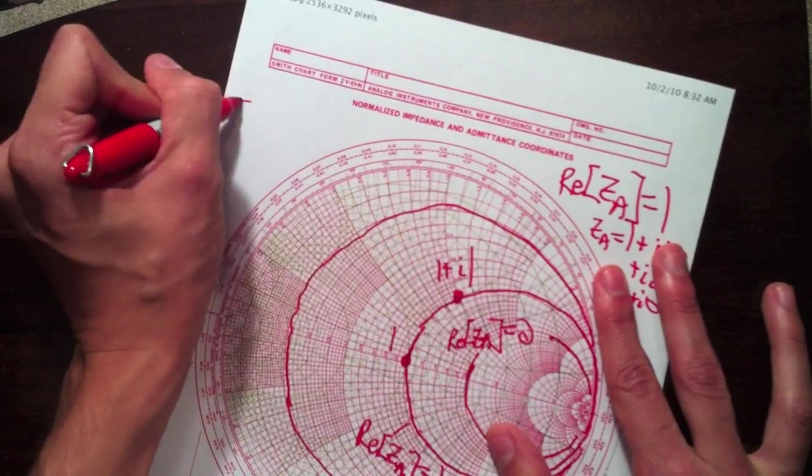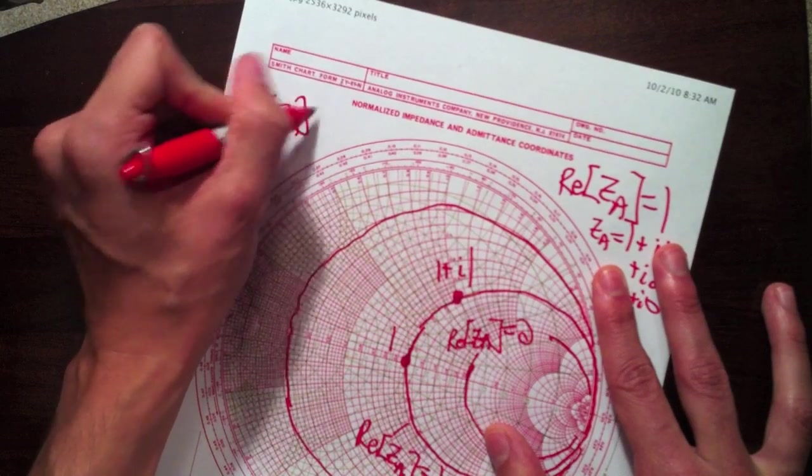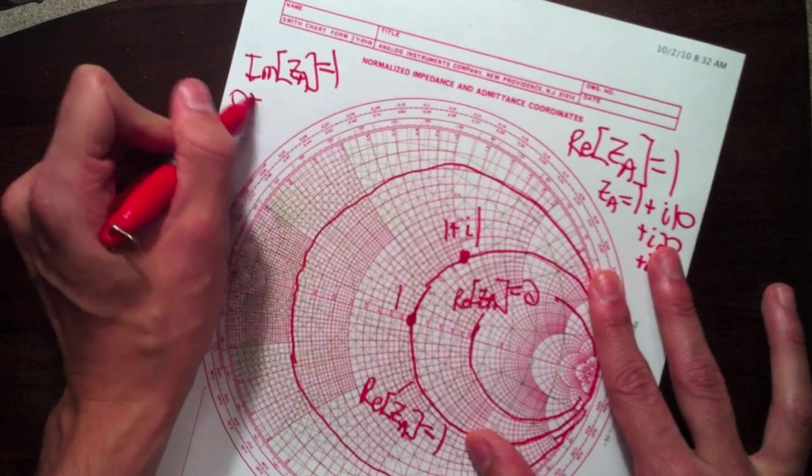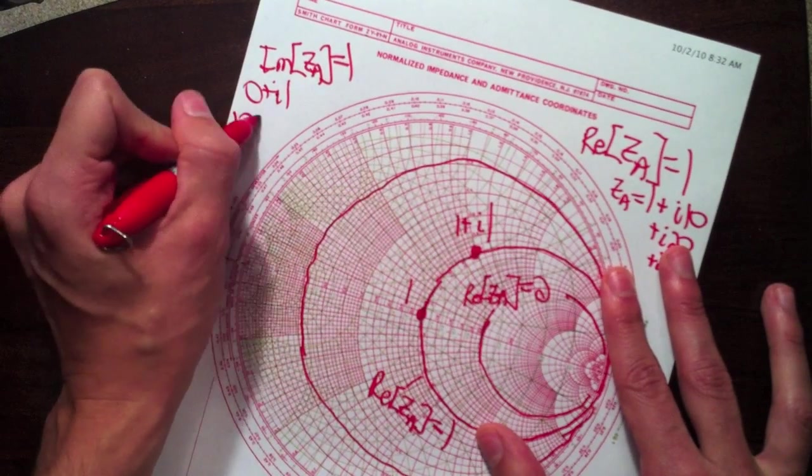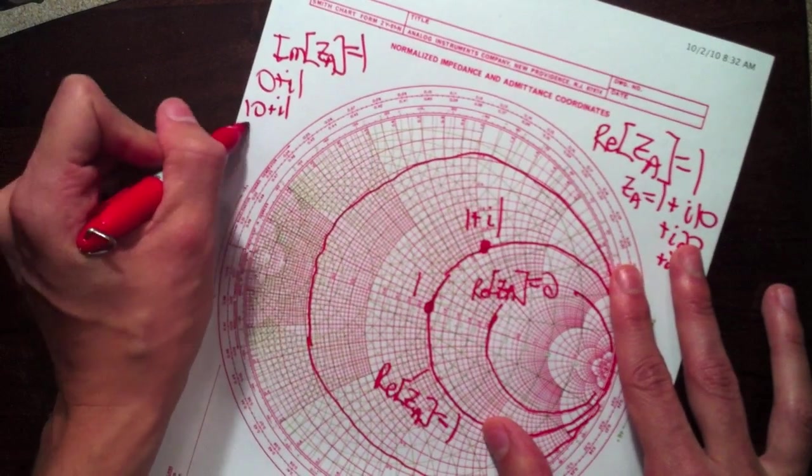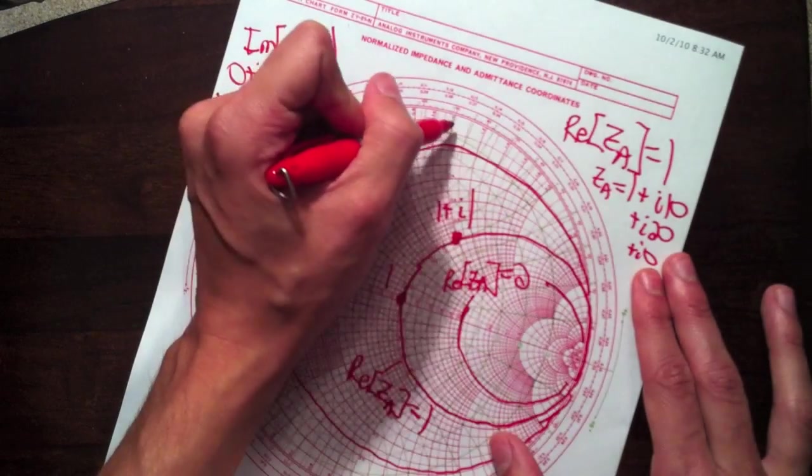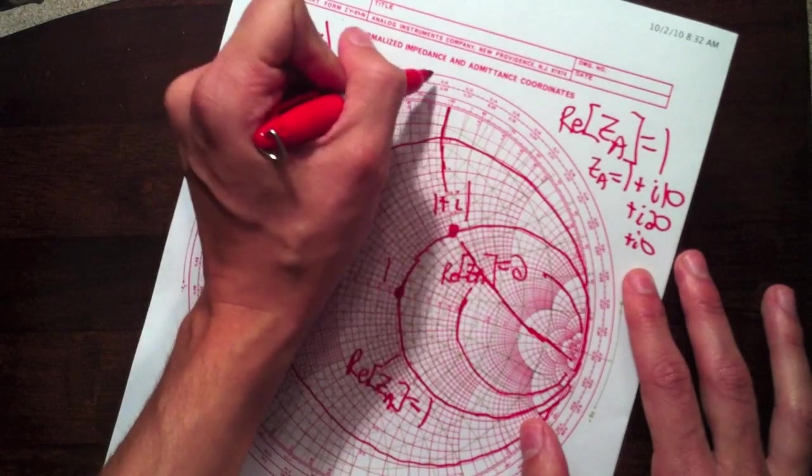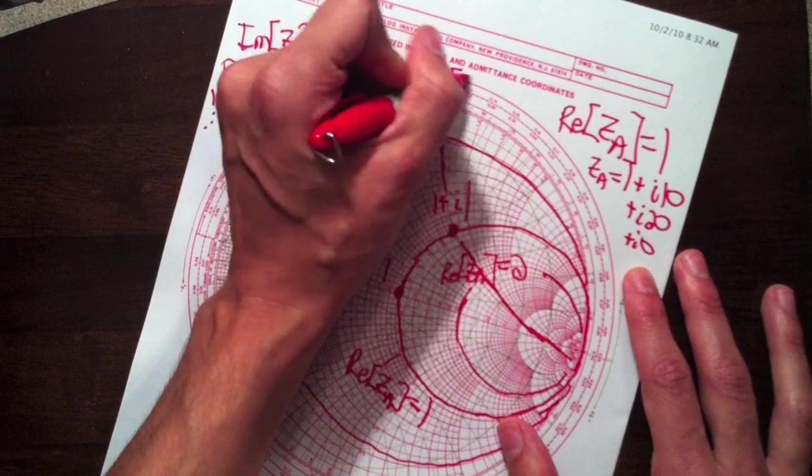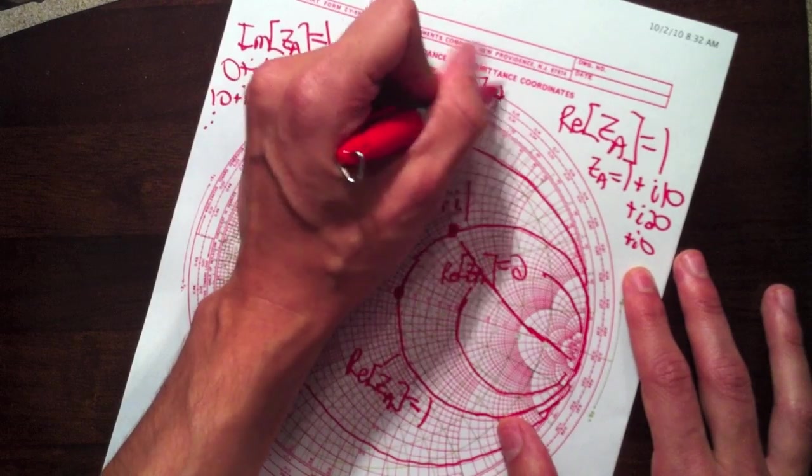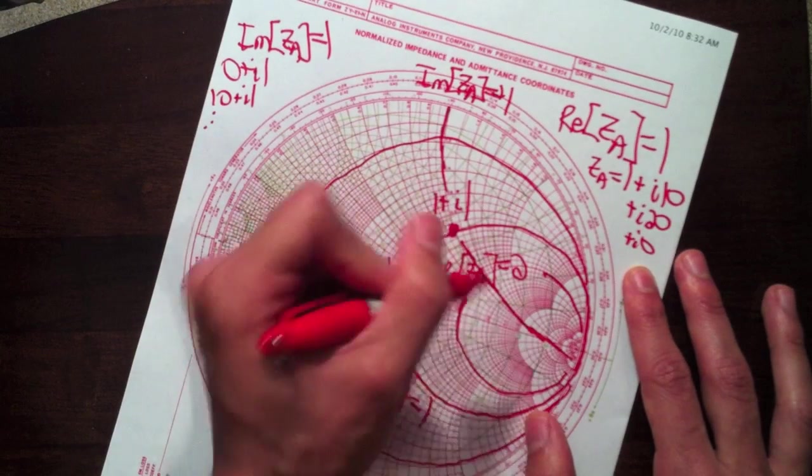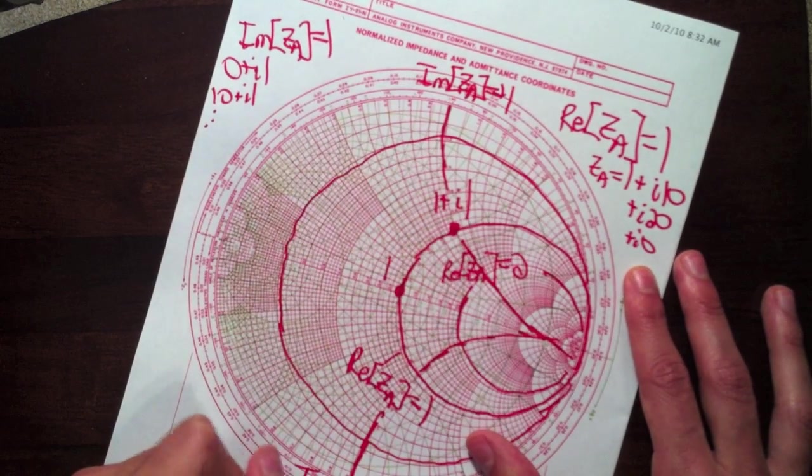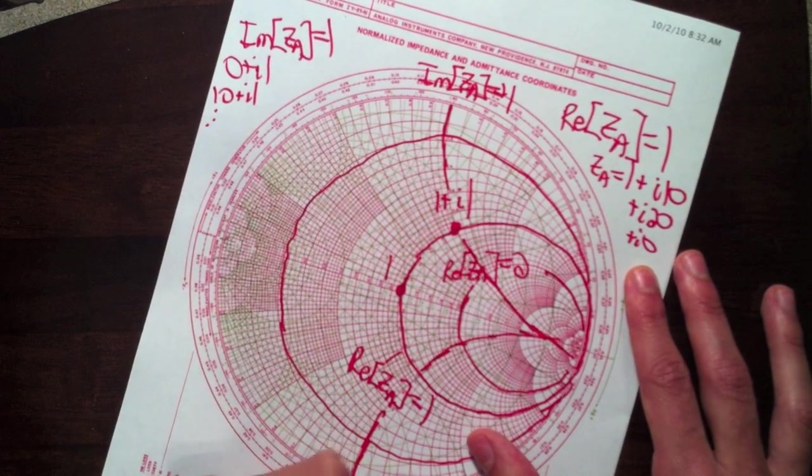Now, let's say we were interested in, where is the imaginary part constant. So, for instance, the set of all values where you're like zero plus i1 or 10 plus i1, et cetera, et cetera. Well, that value is these curves here. So this is imaginary part ZA equals plus one. Now, what about minus one? So then we have this curve. This is the set of all values where imaginary part of ZA equals minus one.